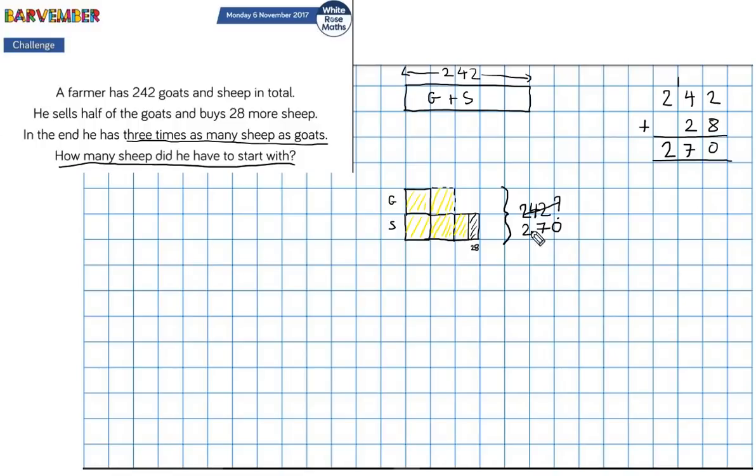So that means that this whole model is 270. So 270 is made up of 1, 2, 3, 4, 5 blocks. 5 equal size blocks. So if I divide 270 by 5.